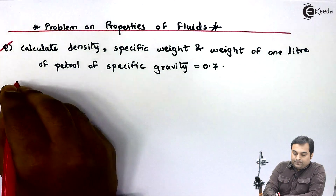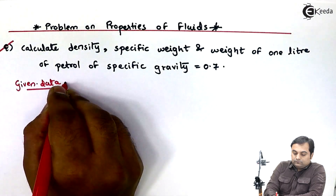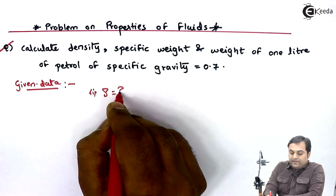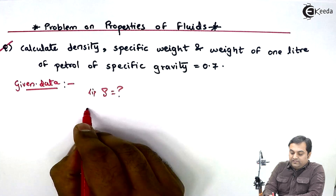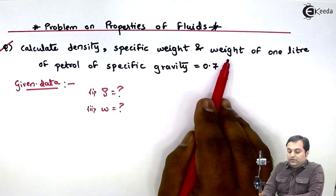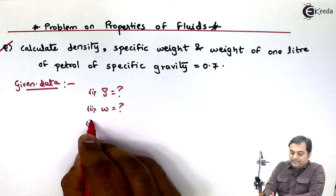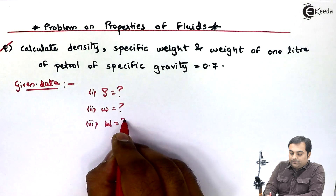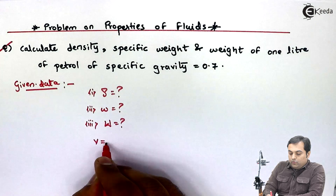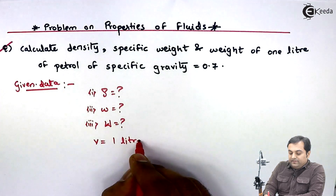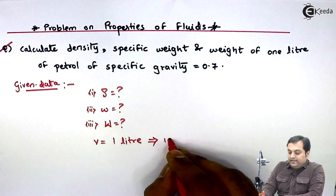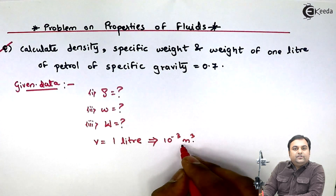Calculate density — density is nothing but mass density, denoted by rho. Specific weight is small w, and weight of 1 liter is denoted by capital W. The volume is given in terms of liters, and since it is 1 liter, we can convert it: 1 liter is equal to 10 raise to minus 3 meter cube.